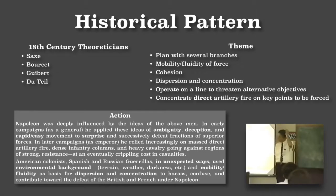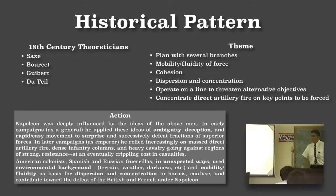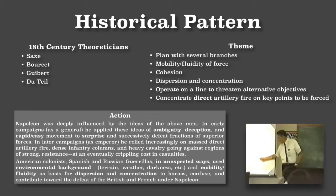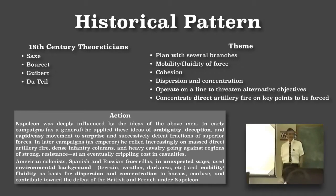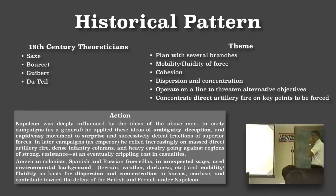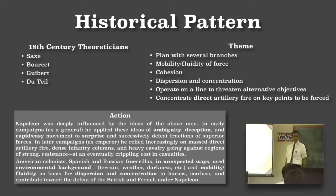Napoleon is familiar with all these people. Note the key idea here. Napoleon: ambiguity, deception, and rapid easy movement — these are the inputs in order to achieve surprise as an output. If you have ambiguity, deception, quickness or speed, those are the kinds of things. You put those together, that's the ingredients through which you get your surprise.